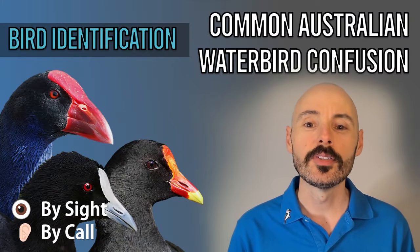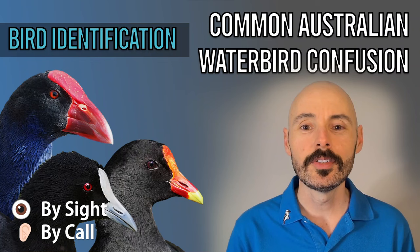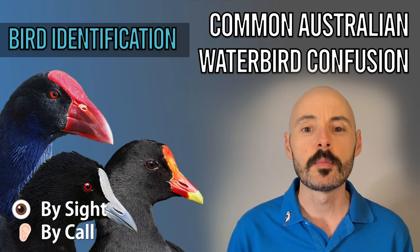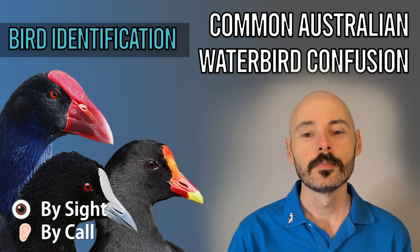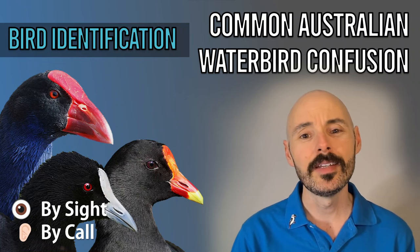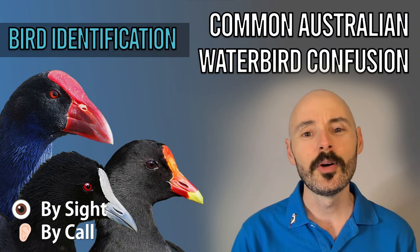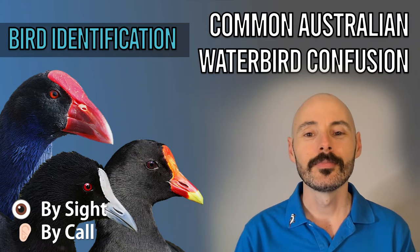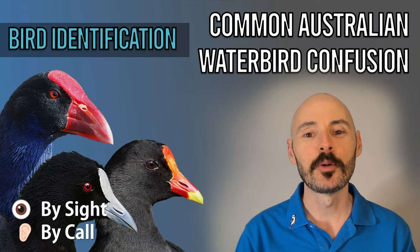Do you often get these three birds on the screen confused, or maybe you've seen these before and didn't realize they were separate species? Well, today we're going to clear away that confusion so you'll be able to easily identify the Australasian Swamp Hen, the Dusky Moorhen, and the Eurasian Coot.